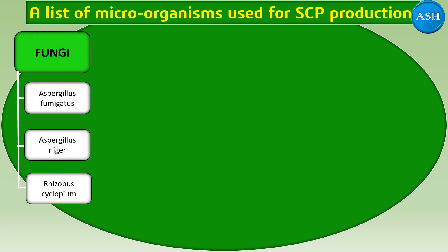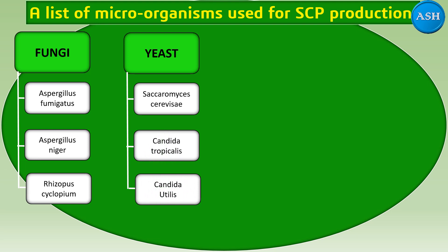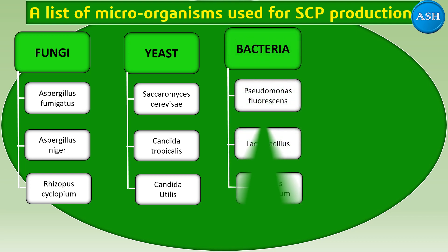One class is fungi. Different types of fungi used for SCP production are Aspergillus fumigatus, Aspergillus niger, and Rhizopus cyclopium. In the class of yeast, different types used are Saccharomyces cerevisiae, Candida tropicalis, and Candida utilis. In the class of bacteria, there are also different varieties such as Pseudomonas fluorescens, Lactobacillus, and Bacillus megaterium, etc.